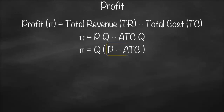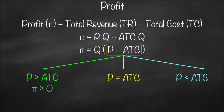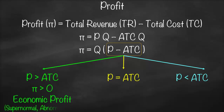Looking at price minus average total cost, we have three scenarios: either price is bigger than average total cost, price is equal to average total cost, or price is lower than average total cost. If price is bigger than average total cost, it means our profit will be bigger than zero, which means we create economic profit — also called super normal profit or abnormal profit.